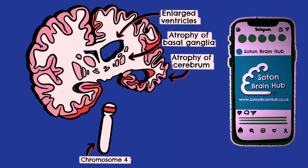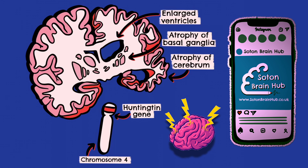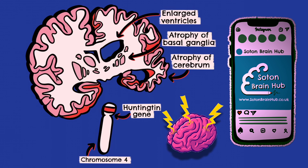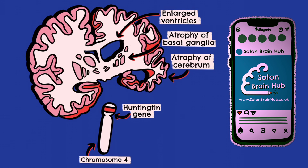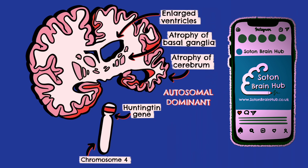What is the genetic cause of Huntington's disease? Huntington's disease is an inherited neurodegenerative disease caused by a mutation on chromosome 4 to the Huntington gene. The mutated Huntington gene codes for an abnormal Huntington protein which damages neurons, leading to widespread neuron atrophy. The mutated Huntington gene is inherited in an autosomal dominant fashion.